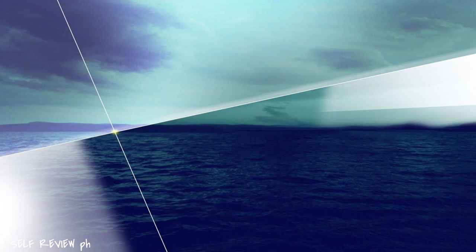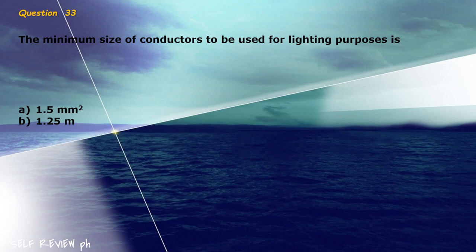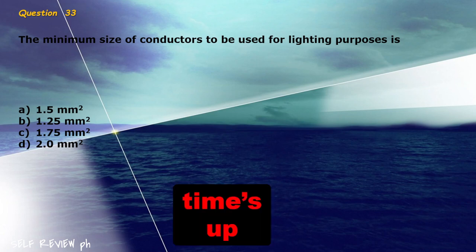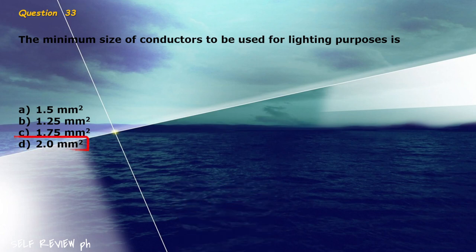Question 33: The minimum size of conductors to be used for lighting purposes is blank. A) 1.5 mm², B) 1.25 mm², C) 1.75 mm², D) 2.0 mm². The correct answer is letter D, 2.0 mm².